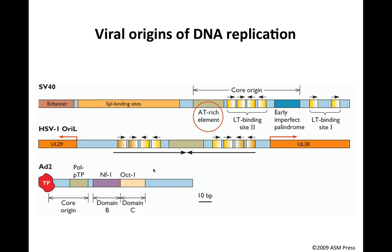Let's look even closer at these origins. Here are three of them in great detail: the SV40 origin, the ORI-L origin of herpes simplex virus type 1, and the left end origin of adenovirus type 2. These have some features in common, and I want to highlight three of them. First, they all contain AT-rich elements, shown in olive green. Here's one in the SV40 origin, here's one in the ORI-L of herpes, and the PTP binding site is shown in orange and is also AT-rich.